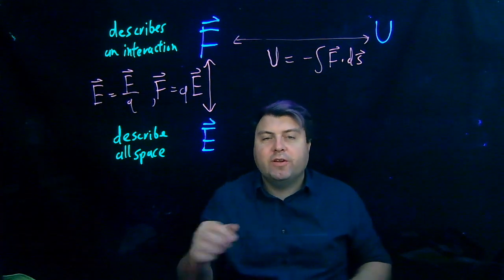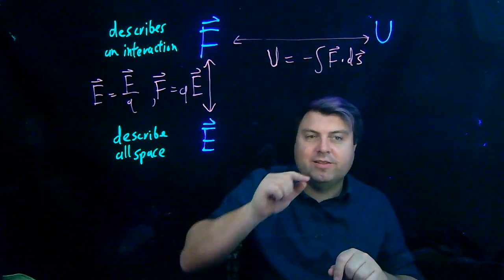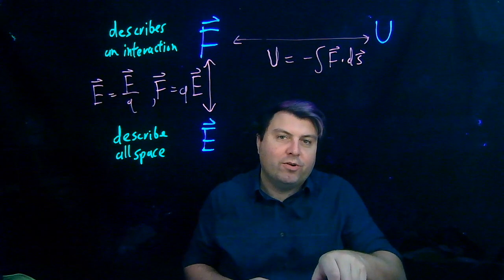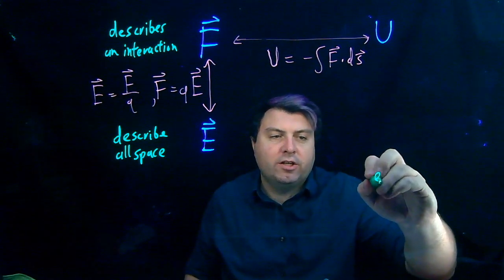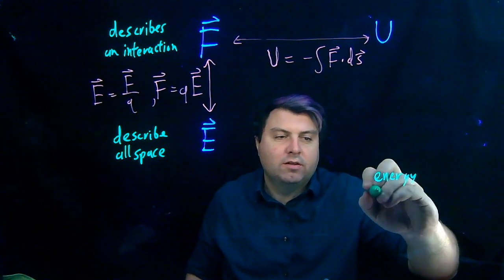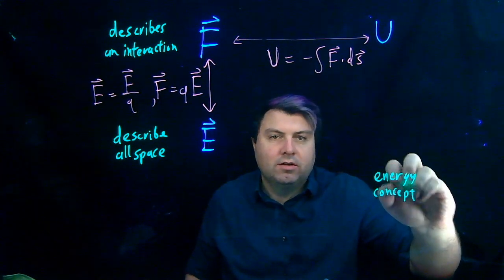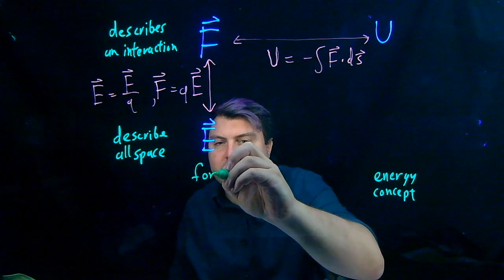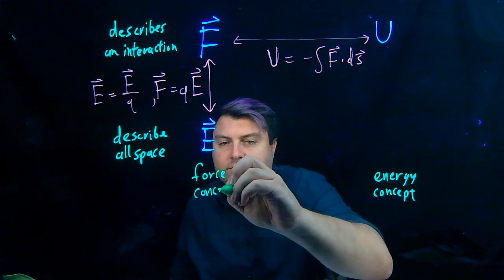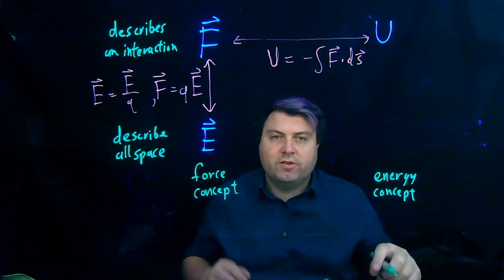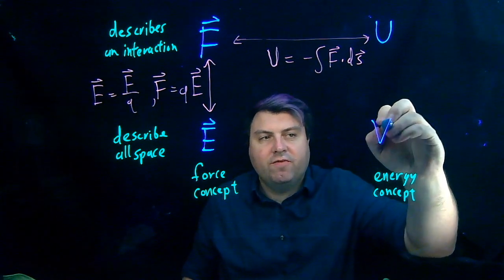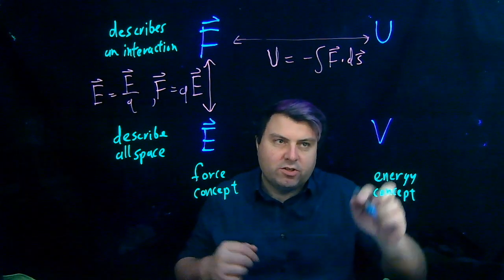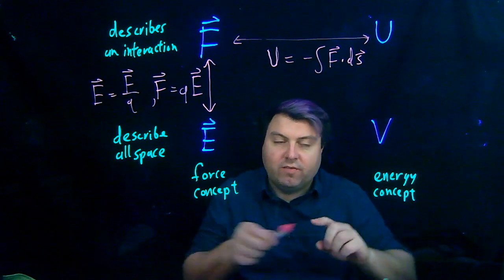As we look at this, we've got three points of a rectangle or quadrangle. We're going to have something that can also be an energy concept as opposed to a force concept, but we want it to describe all space. So we're going to introduce V, the electric potential, sometimes called the voltage.